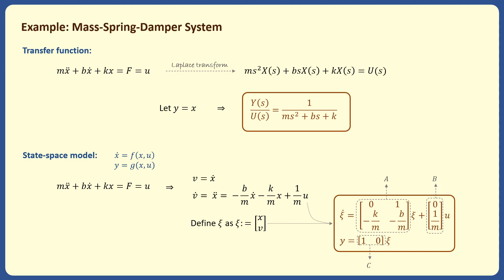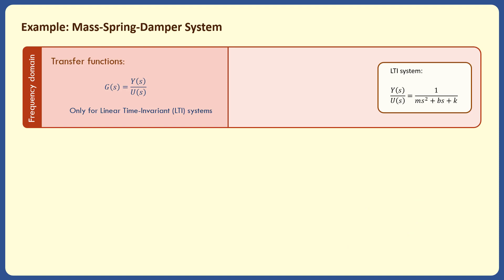Let's now summarize the different representations we obtained for the mass-spring-damper example and compare them. Transfer functions are frequency domain representations which can only be used for linear time-invariant systems, so we cannot use them when the system model is, for example, non-linear. Also, they can only relate one input to one output. This means that if a system has two inputs and one output, we need two transfer functions from the output to each of the two inputs, and to calculate the output of the system to both inputs, we need to use the superposition principle. The advantage of transfer functions is that they make stability analysis very simple — we only need to check the poles of the transfer function to check the stability of the system.